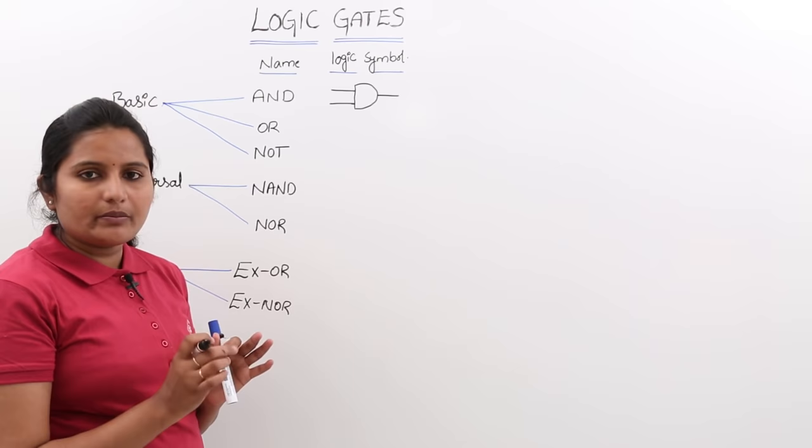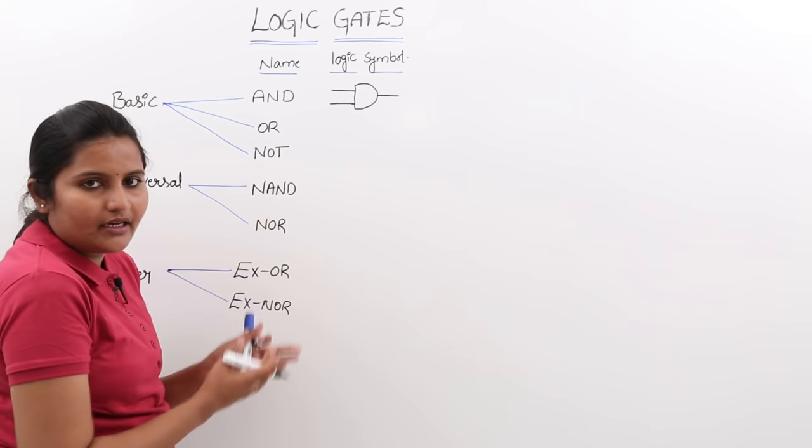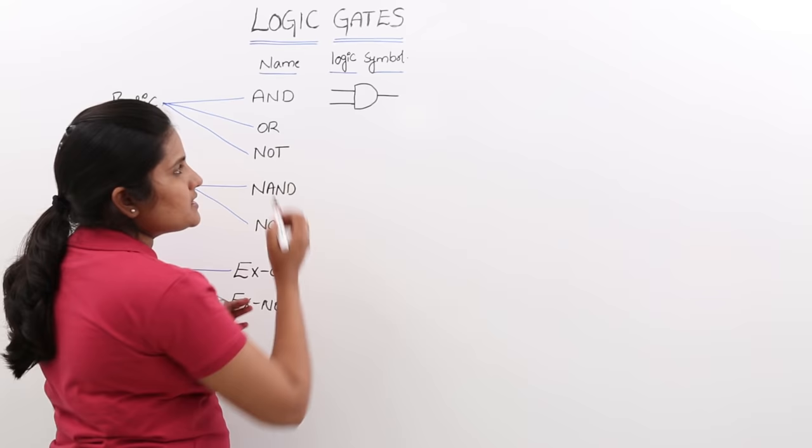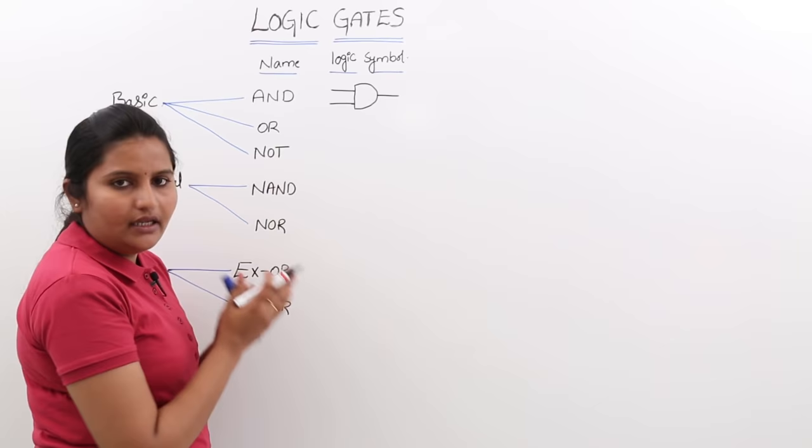I am taking 2-input gates for the logic symbols here. You may have N inputs — just vary the input lines. For example, this is the symbol for a 2-input AND gate. The 3-input AND gate may have 3 lines at the input, and an N-input AND gate may have N input lines.